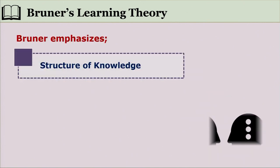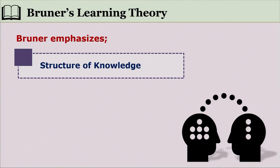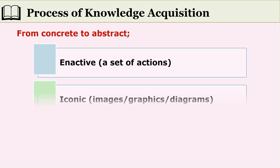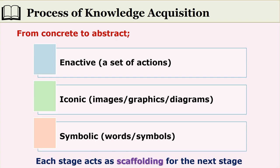Bruner has also analyzed the structure of knowledge — what knowledge consists of, how it is acquired, and how it is to be transacted. He focuses on the process of acquiring knowledge, and in that process we all move from concrete to abstract.